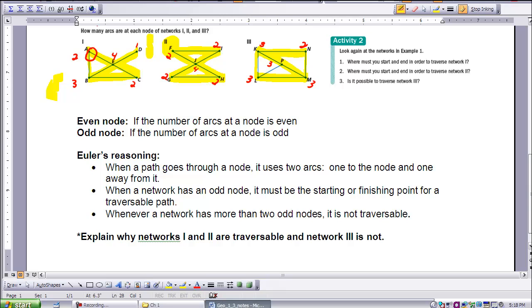When a network has an odd node, it must be the starting or finishing point for a traversable path. Whenever a network has more than two odd nodes, it's not traversable. So I want you to think about why networks one and two are traversable and network three is not. Start the video again when you have had an opportunity to think about that.